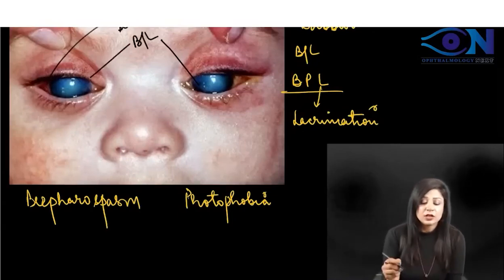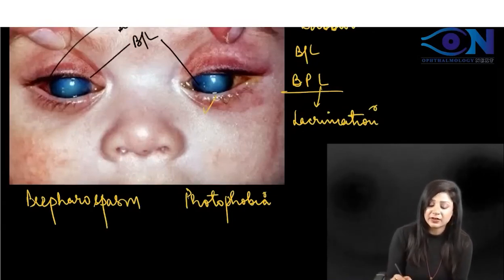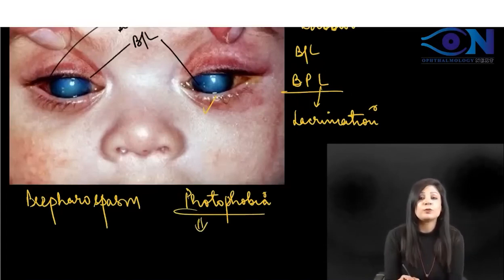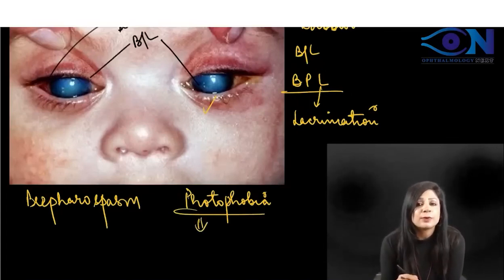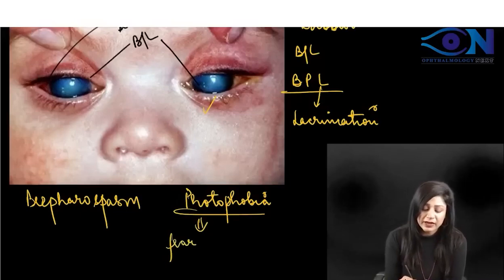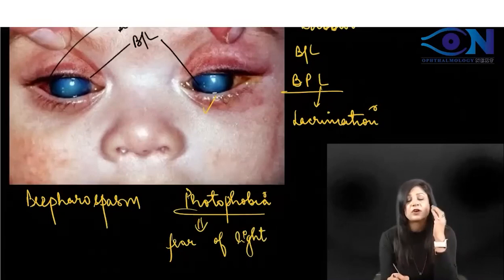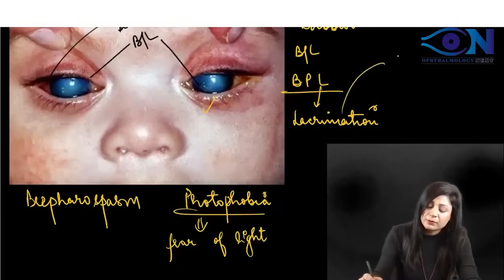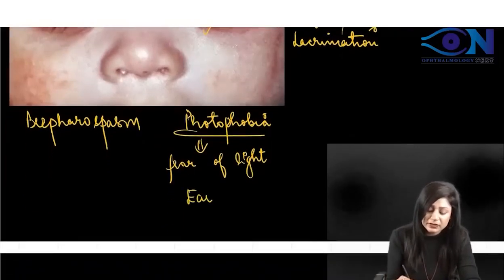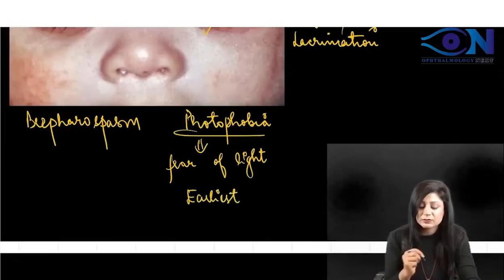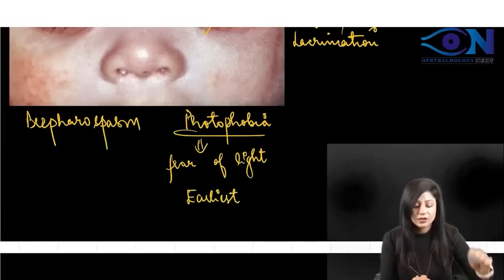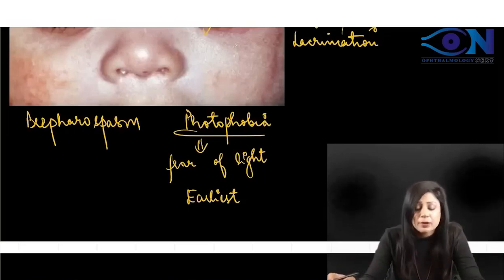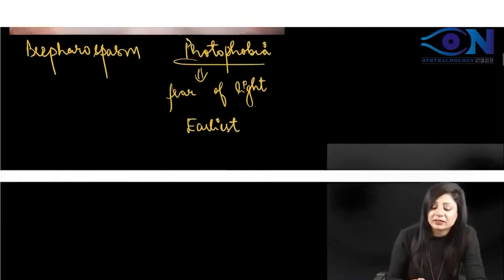You can see the spasm here, and you can see photophobia. Photophobia — the baby cannot say 'I have photophobia'; there will be a fear of light, so you will see the baby trying to put his eyes away from the light. The most common out of these three will be lacrimation, while photophobia will be the earliest manifestation.